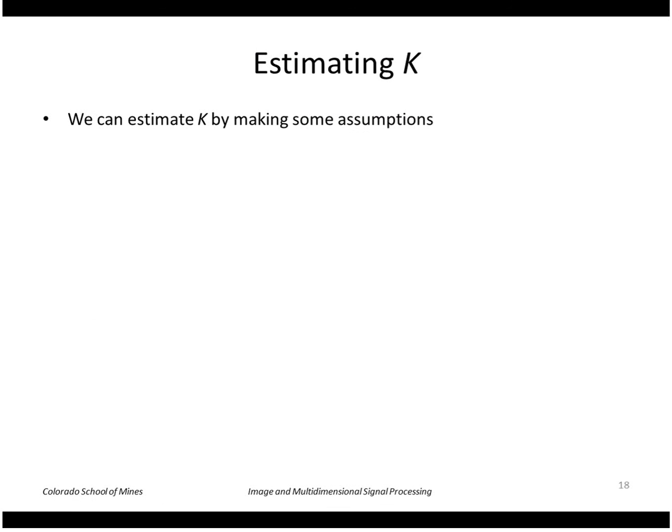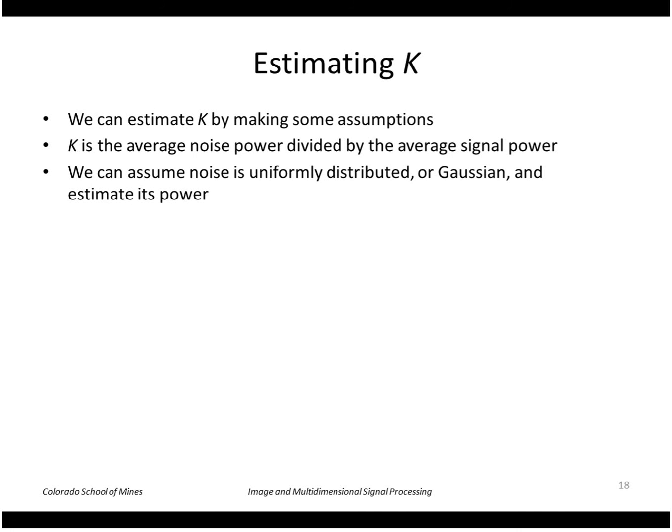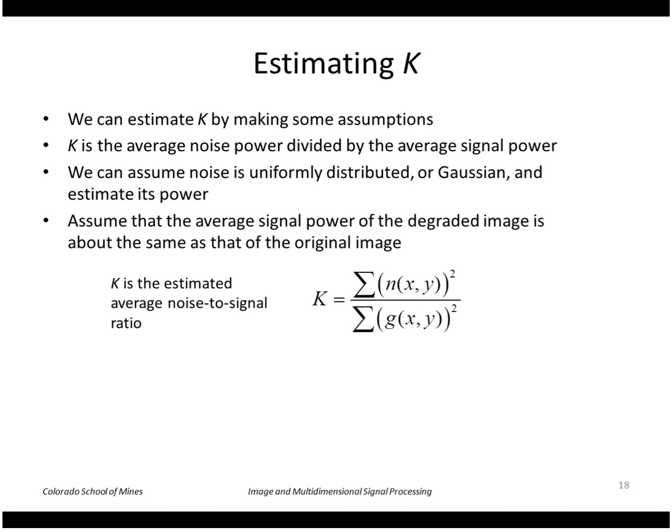So how do you estimate this k? We can make some assumptions. Remember, it's the average noise power divided by the average signal power. We can assume that the noise is uniformly distributed and estimate its power. Then we can assume that the degraded image signal power is about the same as the original image signal power. So we assume some value of noise and we look at the degraded image and compute its power. As a rough estimate, if we believe that our noise is Gaussian distributed with a sigma of one approximately, the image ranges from zero to 255, then k is about 10 to the minus fourth.